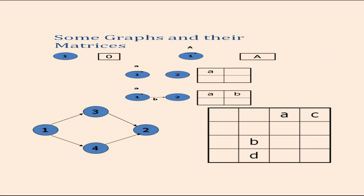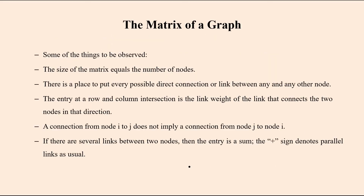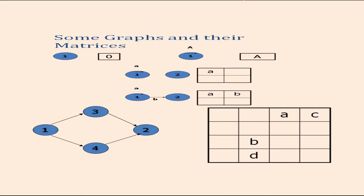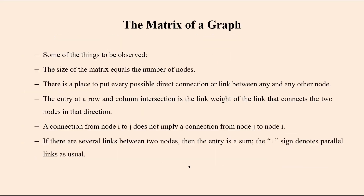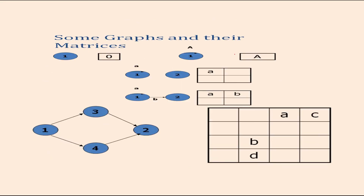Some things to observe in the matrix of a graph: the size of the matrix equals the number of nodes — four nodes gives a 4×4 matrix, two nodes gives a 2×2 matrix. There is a place to put every possible direct connection or link between any node to any other node. The entry at a row-column intersection is the link weight of the link connecting those two nodes in that direction.